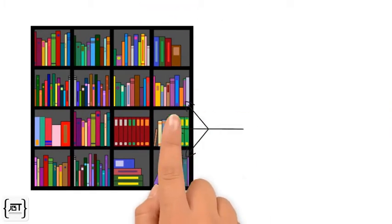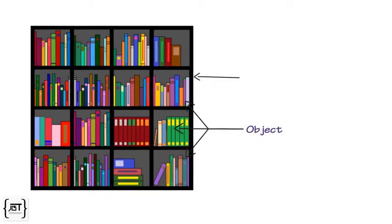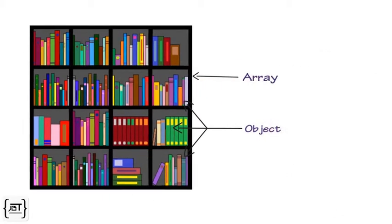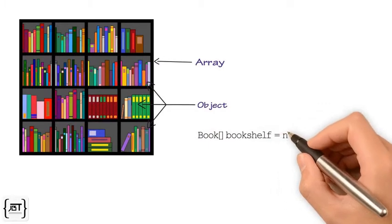For example, a bookshelf holds books. Book is an object and bookshelf is similar to an array. We can create an array of books like this.